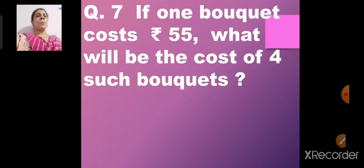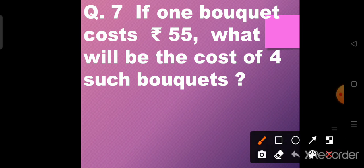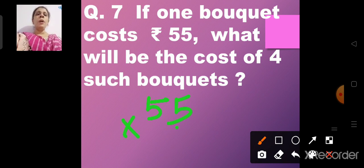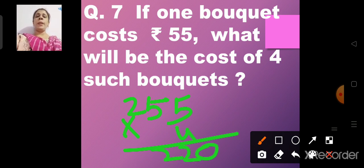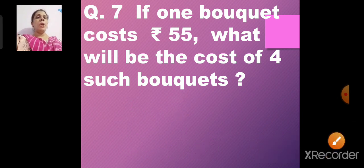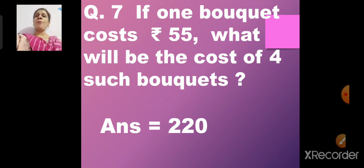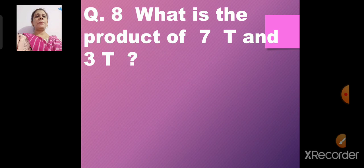Question number 7: If 1 bouquet costs rupees 55, what will be the cost of 4 such bouquets? We multiply 55 by 4. 5 fours are 20 — write 0, carry 2. 5 fours are 20, plus 2 is 22. So 55 into 4 is 220. The cost of 4 bouquets is rupees 220.